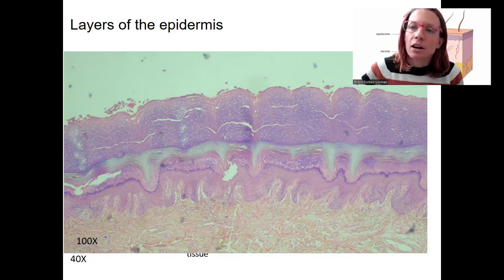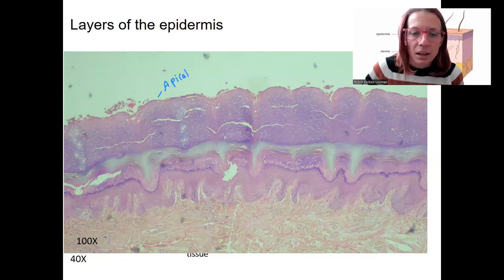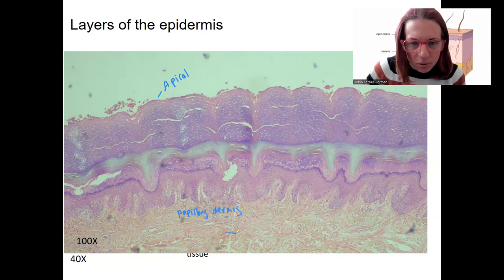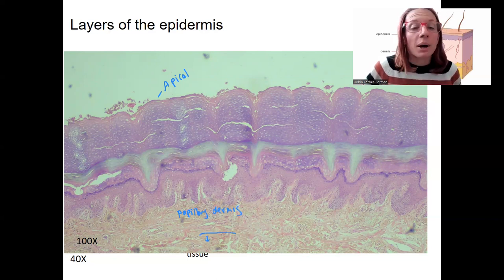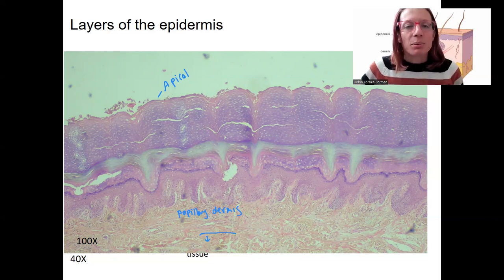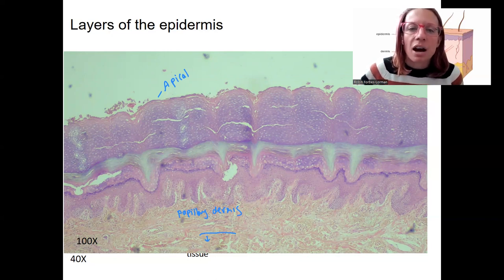Looking at the epidermis, I'm going to start at the top — this is the superficial side of the body, the apical surface of the epithelium. This is the basal side. Here is the papillary dermis down below. The top layer is the stratum corneum, about here.